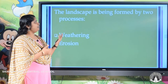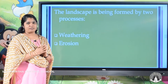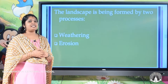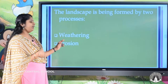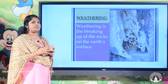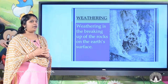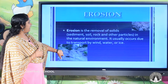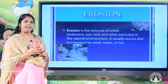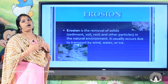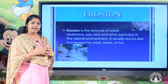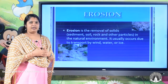The landscape is formed by two processes: weathering and erosion. Weathering means breaking up of stones and other things into small particles. Erosion is the removal of solids — the weathered material — from one place to another. Weathering and erosion together are creating different landforms in our area.